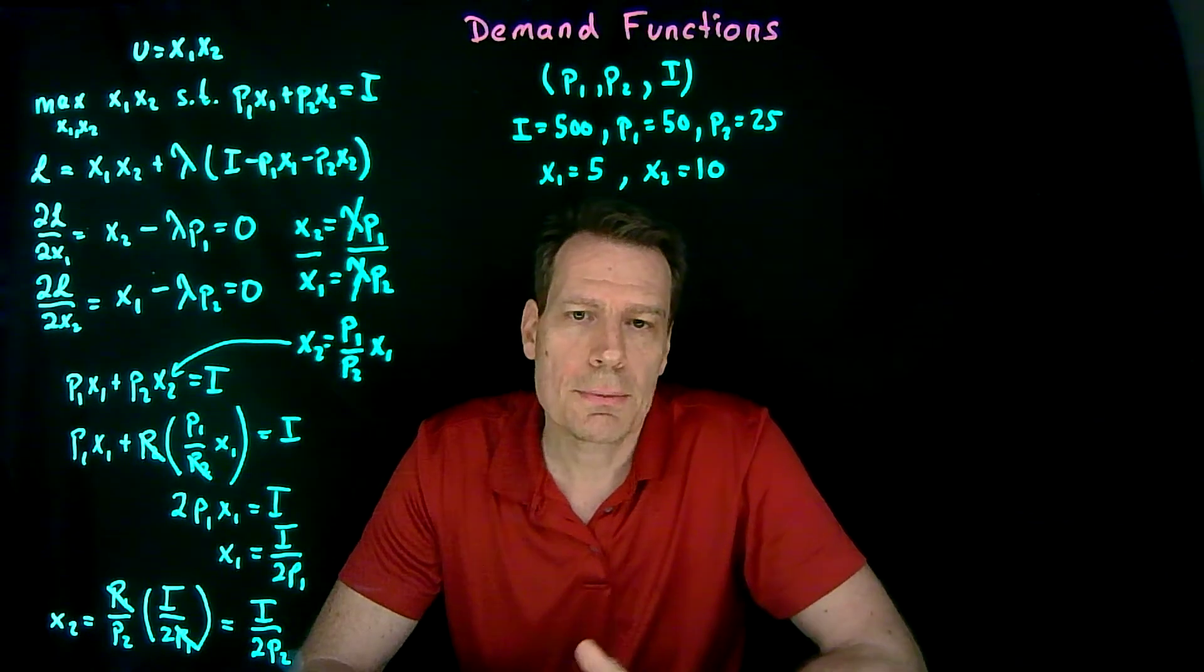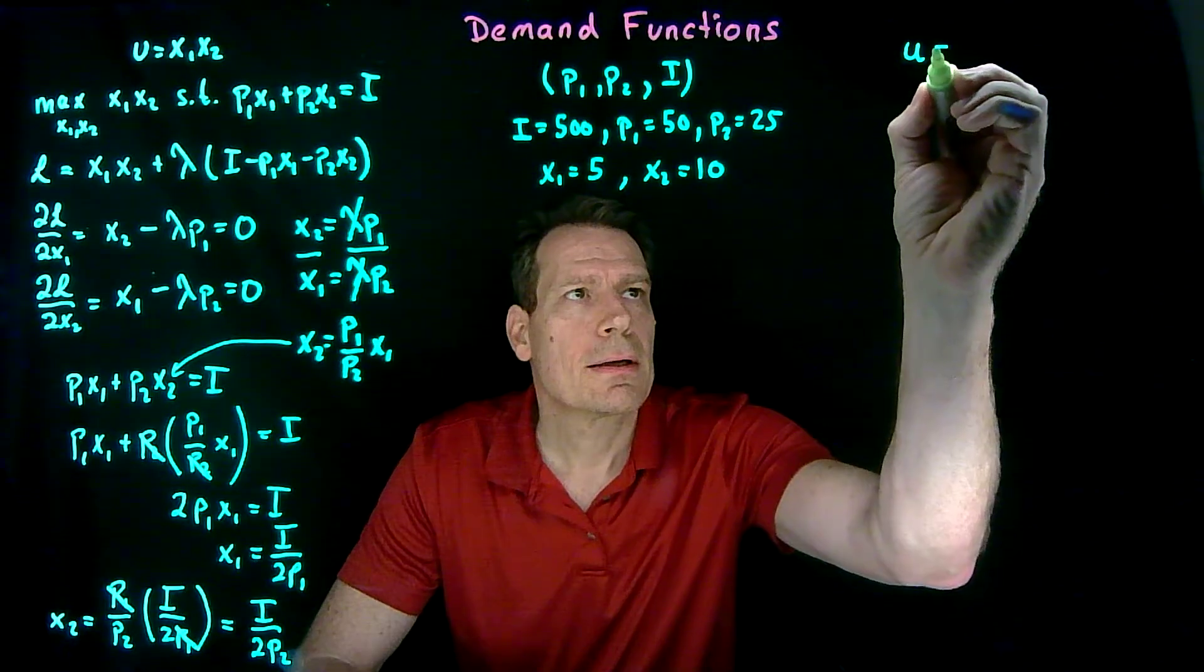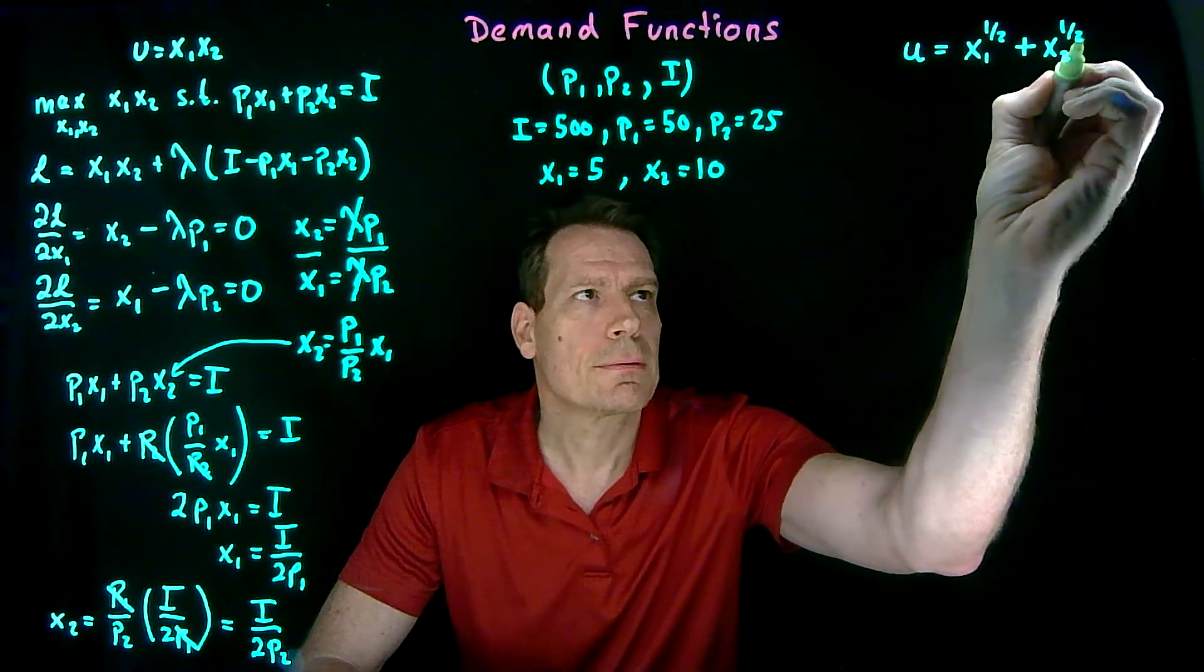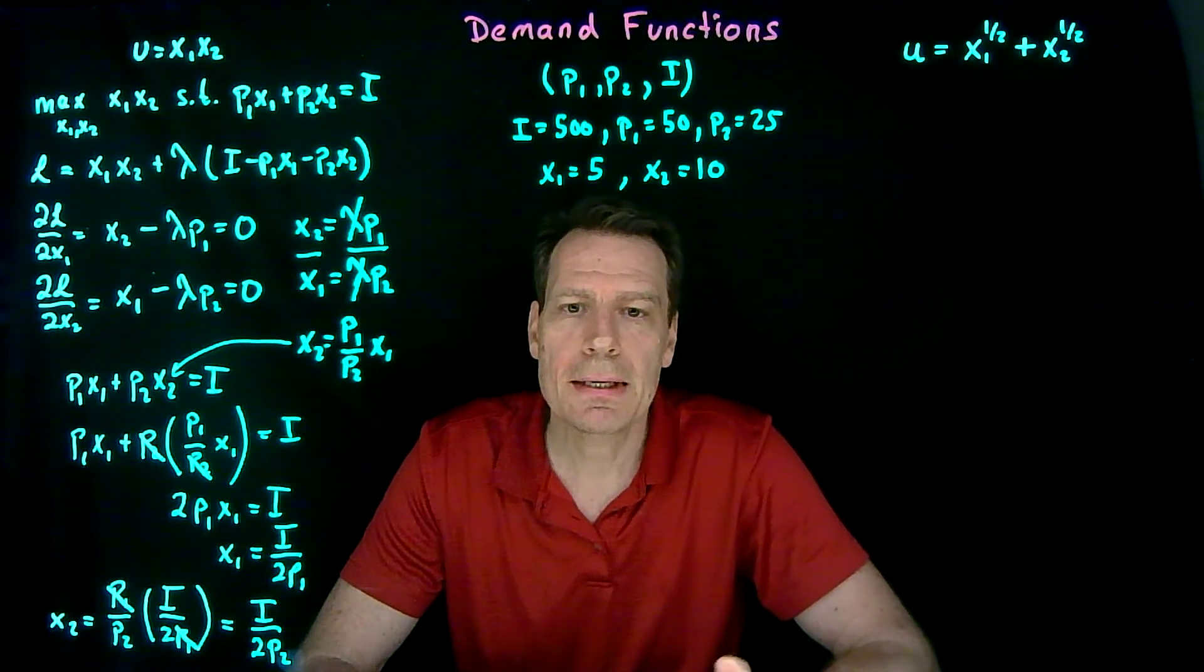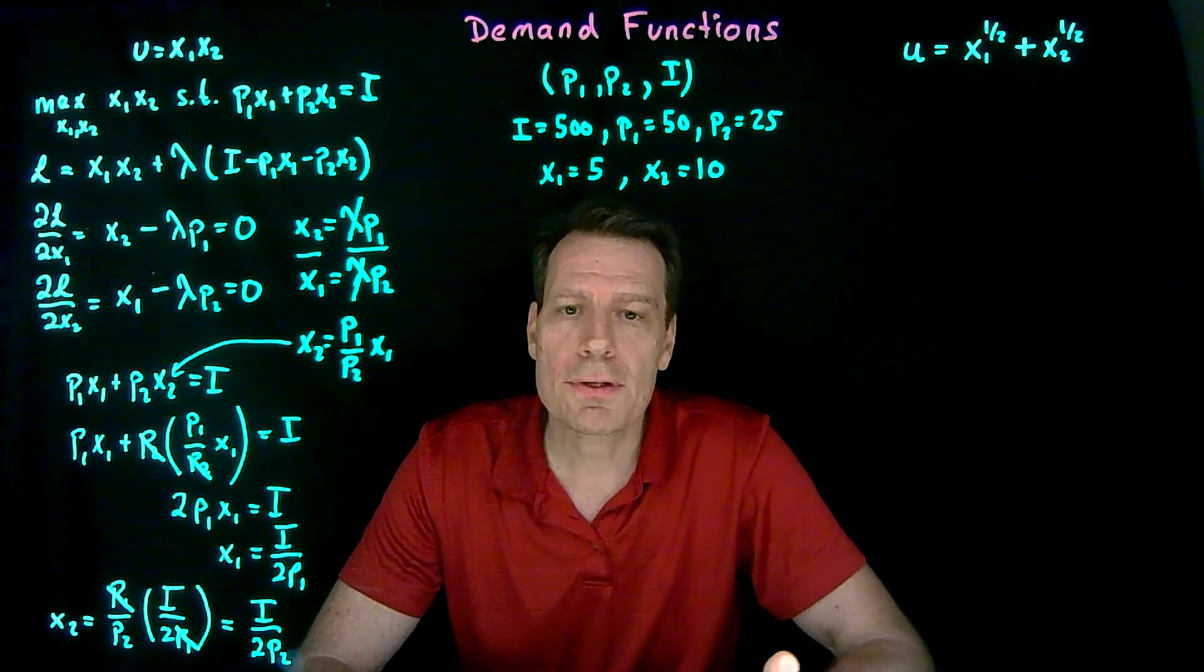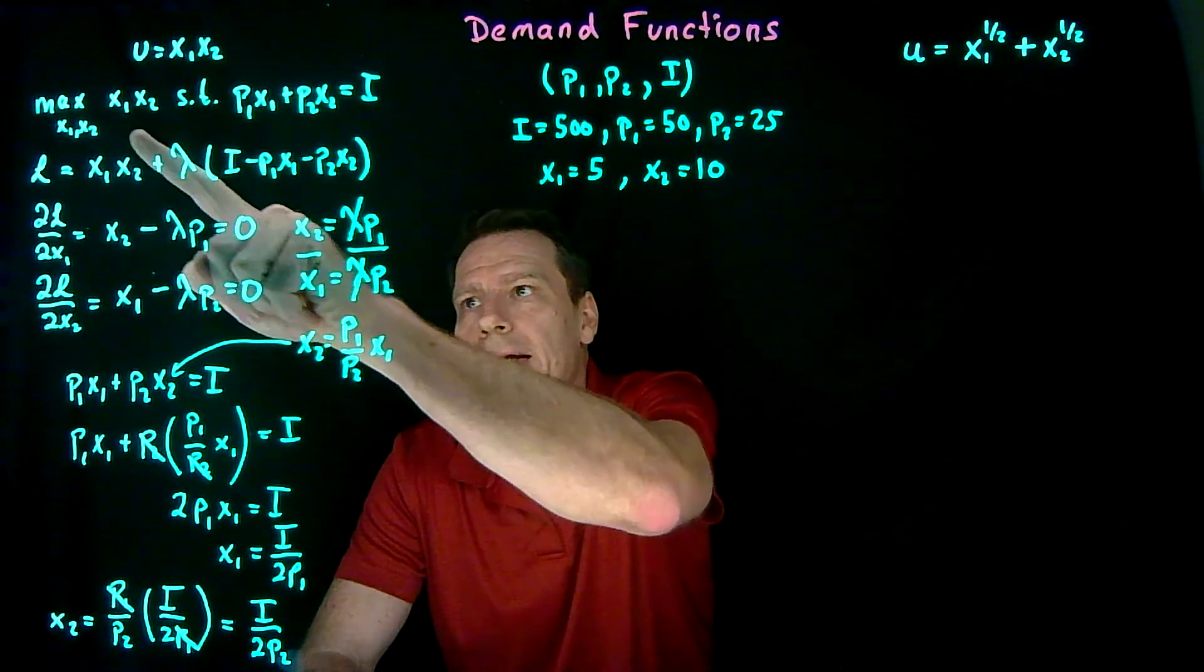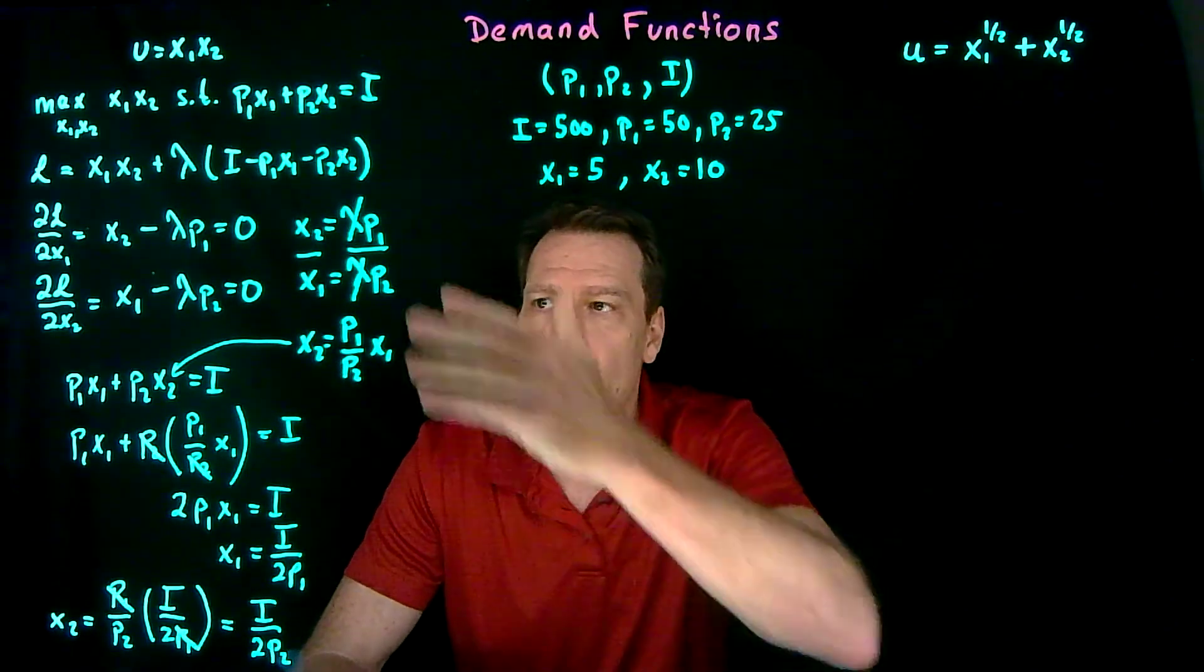In general, that's not going to be the case. For example, if we had a utility function that's equal to x1 to the one-half plus x2 to the one-half, instead of multiplying, we have a plus sign in here. That wouldn't be a Cobb-Douglas utility function. But it turns out to represent an indifference map that satisfies all our usual assumptions. If we plug this in and solve the problem again, we would get different demand functions.